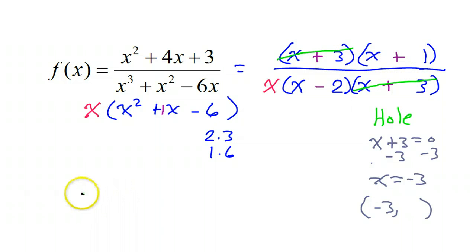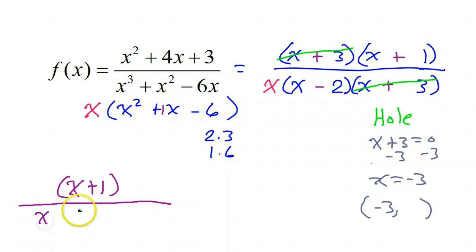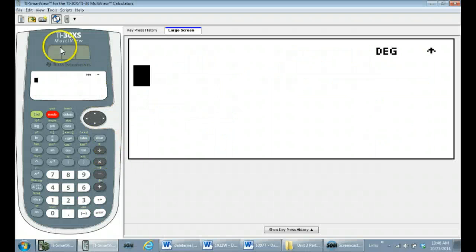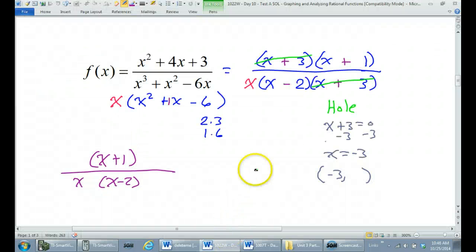If I take out the x plus threes, what I have left is x plus one over x times x minus two. This is the rest of the function that survives. I'm going to put this in my calculator and see what's going on at negative three. I will consult my TI-30 XS multi-view. I have x plus one over x times x minus two.